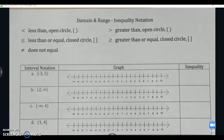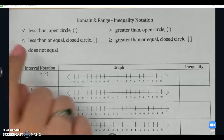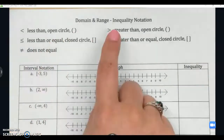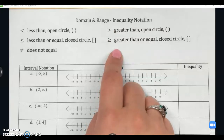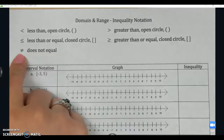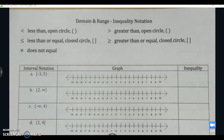Today we are continuing domain and range, looking at two different notations: inequality notation and set notation. Our inequality notations correspond to our graph, or if we're given interval notation, we can rewrite it as an inequality. Open circles or parentheses use less than or greater than symbols. Closed circles or brackets use less than or equal to or greater than or equal to. If we're excluding a single value, we use does not equal instead of two separate intervals with a union symbol — it's a shorthand version.